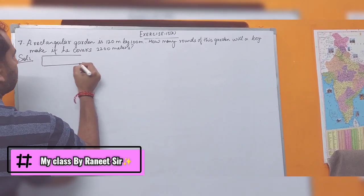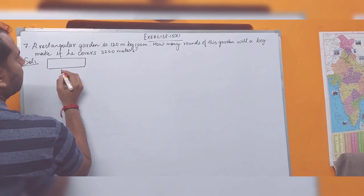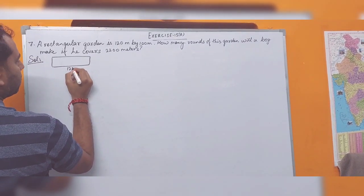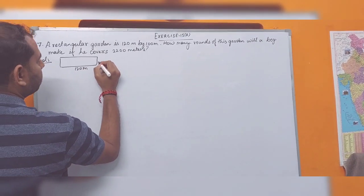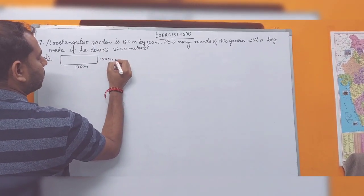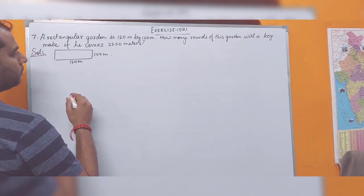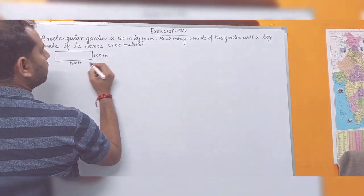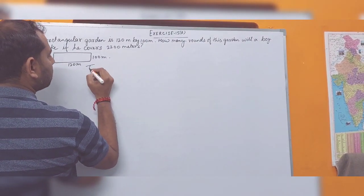So, a rectangular garden is given with length 120 meters and breadth 100 meters. First of all, we have to find out the perimeter of the given rectangular garden.